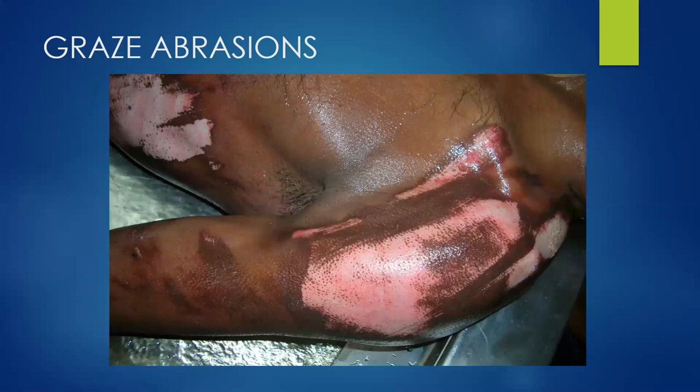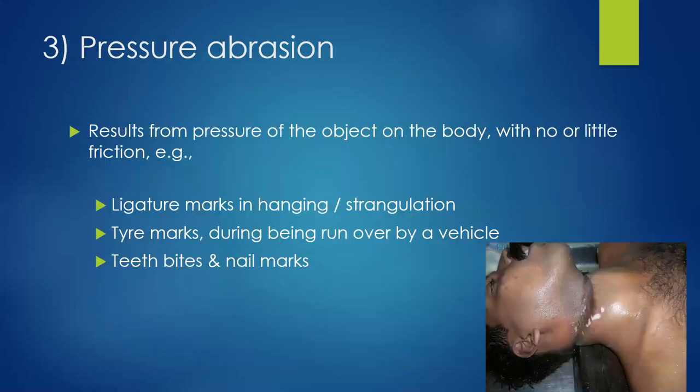Pressure abrasion results from pressure of an object on the body with little or no friction. Common examples are ligature marks on the neck in hanging and strangulation, tire marks from being run over in road traffic accidents, and teeth bite and nail marks.